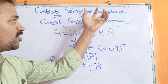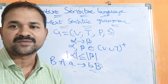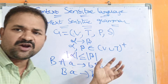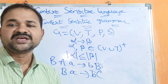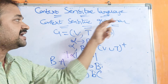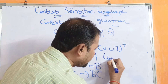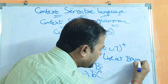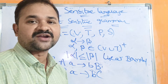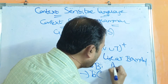Now let's see what is context sensitive language. Context sensitive language means a language that is generated by the context sensitive grammar. We have a set of productions, and based on these productions, if we generate a language, that language is called the context sensitive language. The context sensitive grammar is accepted by linear bounded automata.